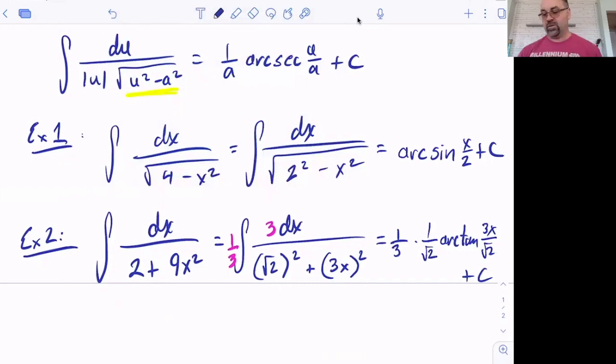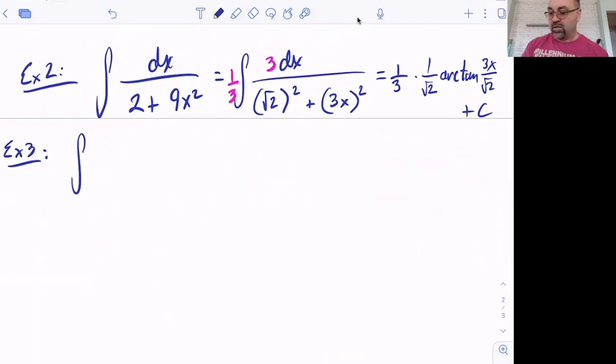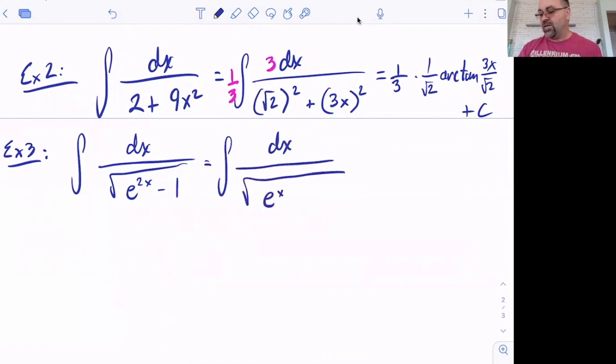Sometimes it won't be as obvious. Let me take you to example three here. This one's a little tricky. Because here we go. We've got dx over the square root, and it's got e to the 2x in here minus one. Well, right off the bat, I'm going, okay. I see this radical. I've got e to the 2x minus one. I don't really see my squared or anything in there. And that's because I got to remember that the rules for exponents. e to the 2x, that's e to the x quantity squared.